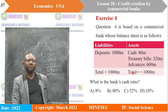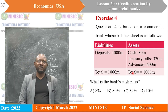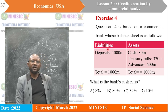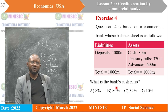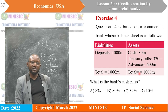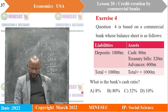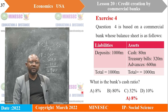Exercise 4 is based on a commercial bank whose balance sheet is provided. What is the bank's cash ratio? The cash ratio is cash divided by total assets, times 100 to get a percentage. So 80 divided by 1,000, times 100, equals 8%. The right answer is A: 8%.